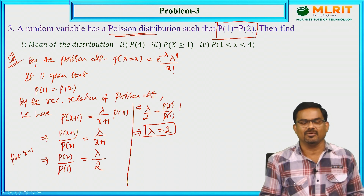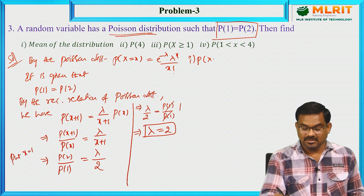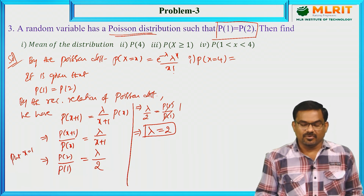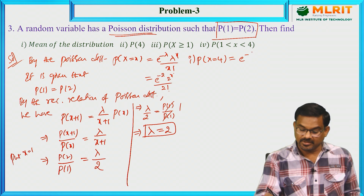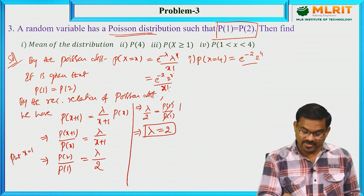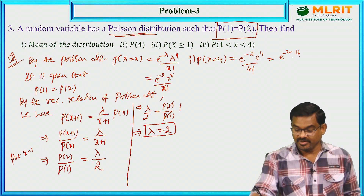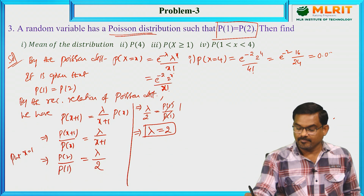Now we have λ = 2. We can calculate the probability of 4 successes: P(X = 4) = e^(−2) · 2^4 / 4! = e^(−2) · 16 / 24. After calculating using e^(−2), the final answer is 0.0902.